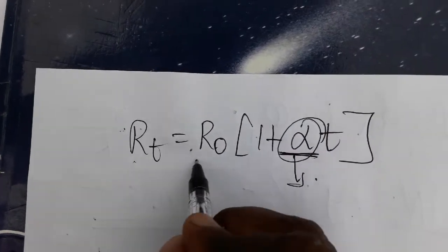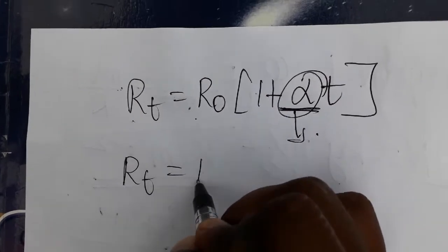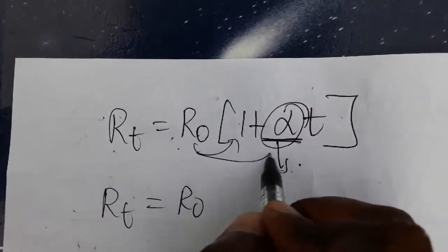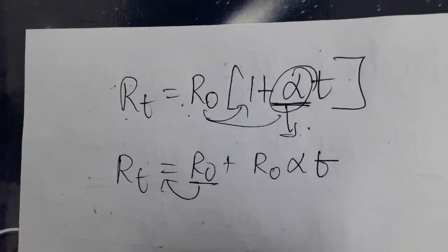RT equals R0 times 1 plus alpha T. This we already know. So RT equals R0 plus R0 alpha T. I am taking R0 inside the brackets.